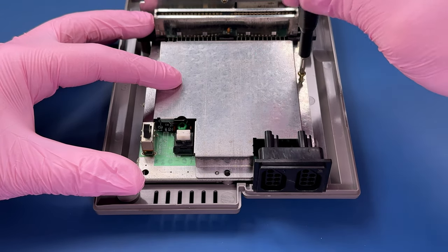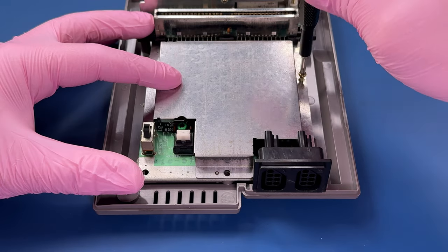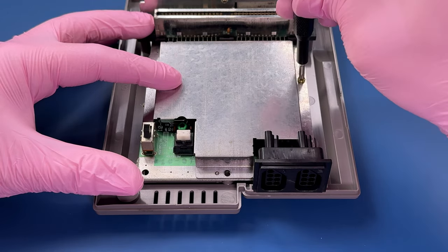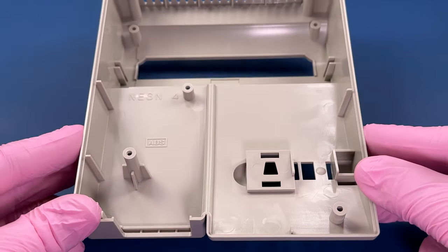When threading a metal screw into plastic, I find it helpful to turn it backwards a bit first. And then sometimes that helps align the screw so that it goes in nice and easy. Threaded as it should.